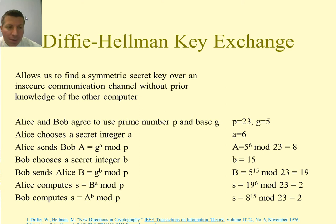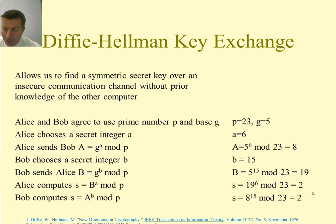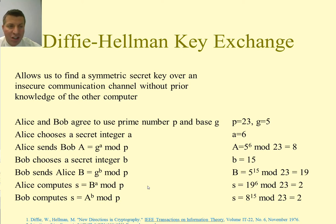Using this approach — as shown in the example on the right — both parties generate the same symmetric key without knowing the other person's secret integer. These two computers can communicate without other computers knowing the symmetric key, because the keys were generated using their own secret integers and then transmitted to the other computer.